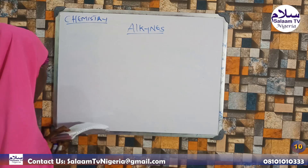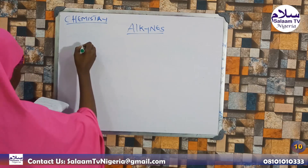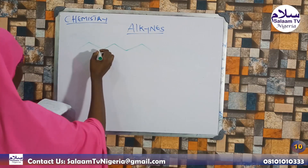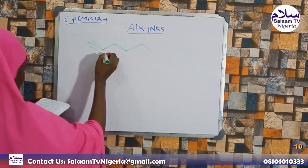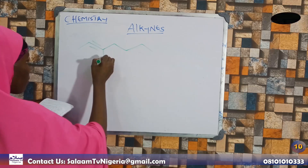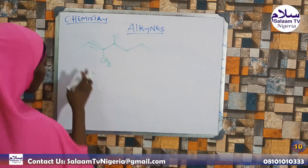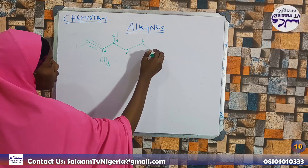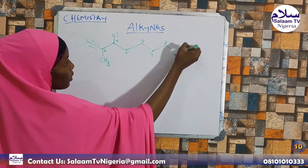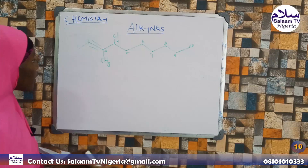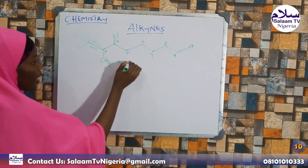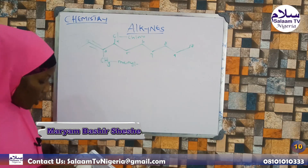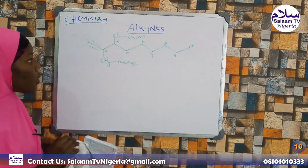Last example: we will look at cycloalkynes — alkynes in the form of a cycle. We count 1, 2, 3, 4, 5, 6, 7, 8, 9, 10 — and we note there is no substituent here in this case. We also note the alphabetical order rule: when naming substituents, they are listed in alphabetical order.